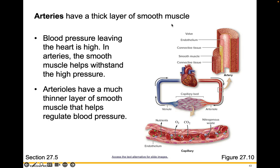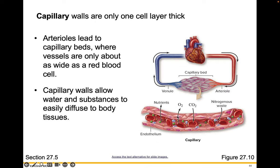Arteries have a thick layer of smooth muscle. Blood pressure leaving the heart is high — right out of the heart there's a lot of pressure because it's so close to the pump. In arteries, the smooth muscle helps to withstand that high pressure. Arterioles have a much thinner layer of smooth muscle that helps to regulate blood pressure. Capillary walls are only a single cell layer thick — arterioles lead to capillary beds where vessels are only about as wide as a red blood cell. Capillary walls allow water and substances to easily diffuse into body tissues, with oxygen leaving the blood and entering tissues, and CO2 leaving the tissues and entering the blood.